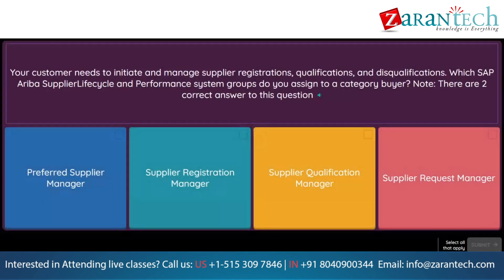Question. Your customer needs to initiate and manage supplier registrations, qualifications, and disqualifications. Which SAP Ariba Supplier Lifecycle and Performance system groups do you assign to a category buyer? Note, there are two correct answers. Option 1: Preferred supplier manager. Option 2: Supplier registration manager. Option 3: Supplier qualification manager. Option 4: Supplier request manager.